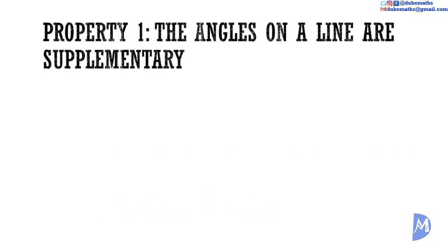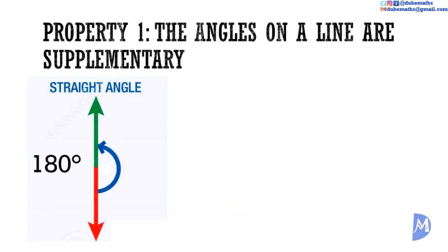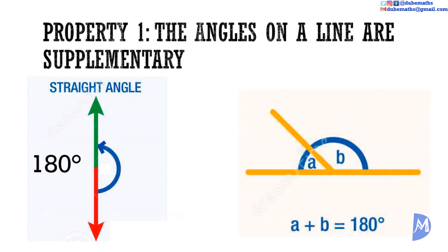We covered this before. A straight angle has an angle of 180 degrees. So however it is divided, the sum of all the divisions add back to 180 degrees.